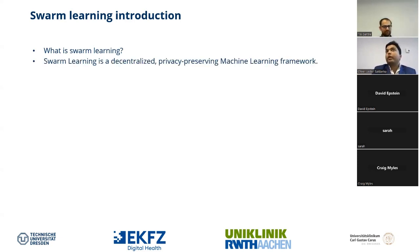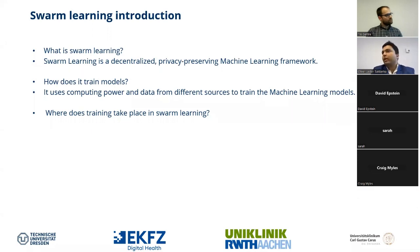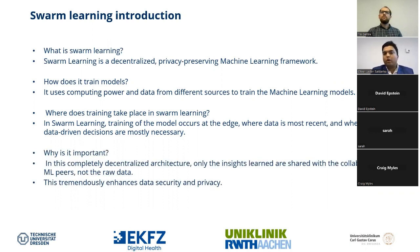Swarm learning is a fully decentralized, privacy-preserving machine learning framework. Models are trained using different computational sources across different data sites — you don't need a very big data center, just multiple smaller computational sources at each site where the data stays. Training always takes place at the edge, enabling important data-driven decisions. The biggest problem of data sharing can be eliminated with swarm learning.